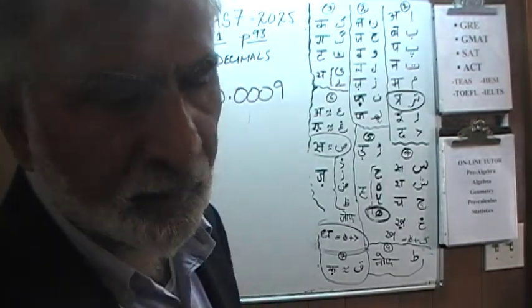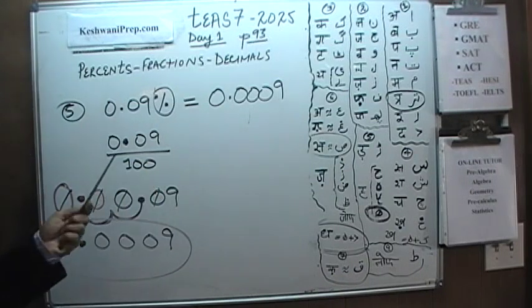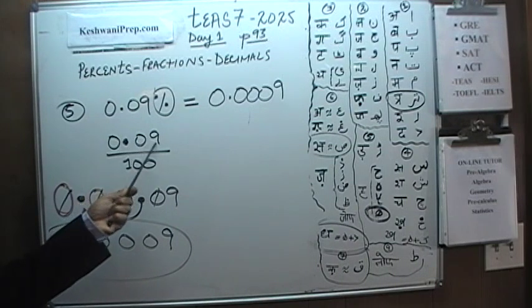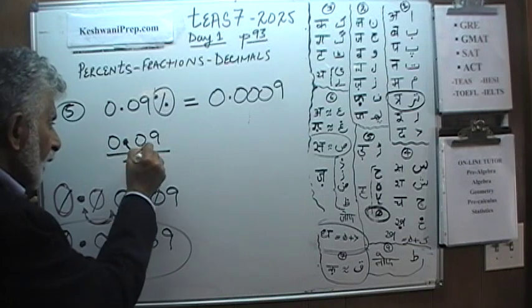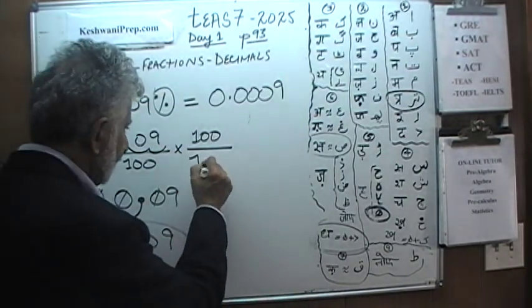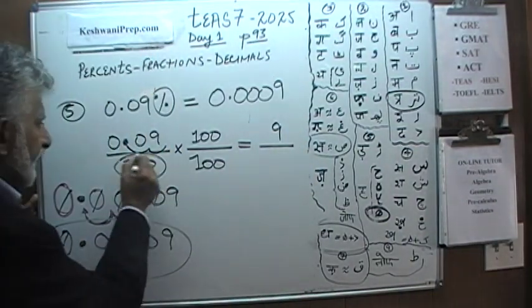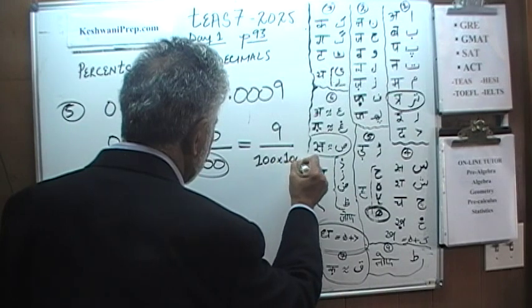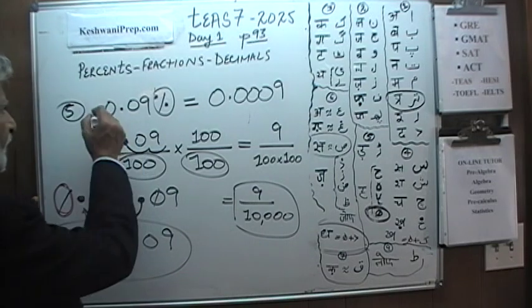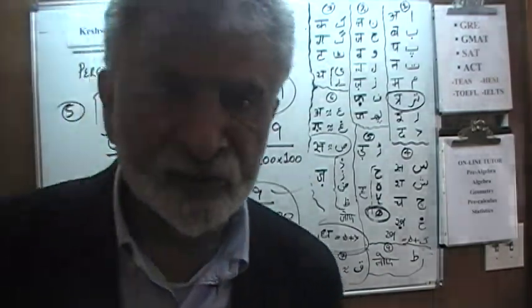Now let's express 0.09 percent as a fraction. We start with 0.09 over 100. We cannot leave a decimal in the numerator — it must be a whole number. To convert 0.09 to a whole number, move the decimal two places to the right by multiplying by 100. Since we multiply the top by 100 we must multiply the bottom by 100 as well. 0.09 times 100 gives us 9, and on the bottom we have 100 times 100, which is 10,000. So 0.09 percent expressed as a fraction is 9 over 10,000. All three forms — the percentage, the decimal, and the fraction — represent the same quantity.